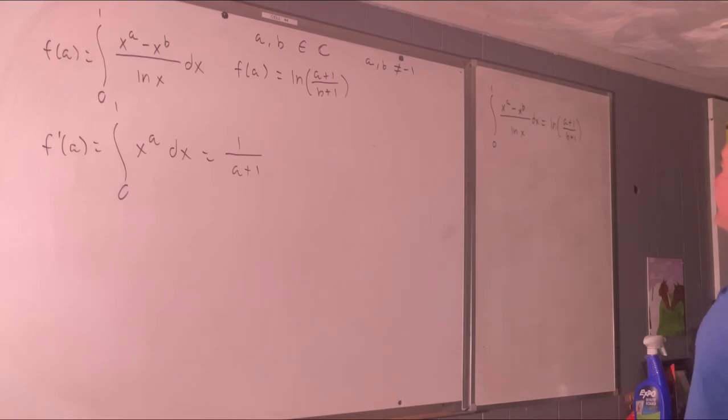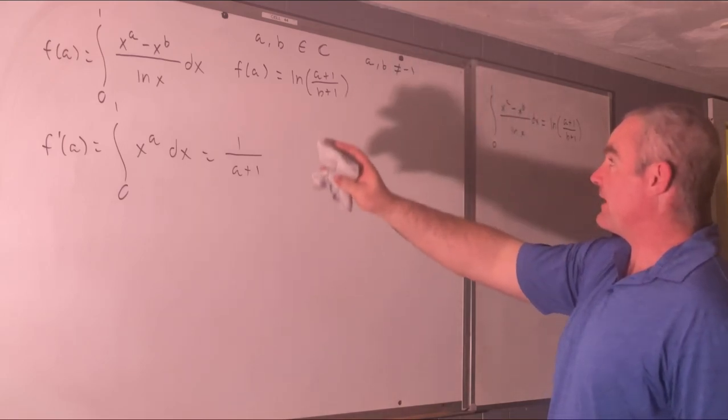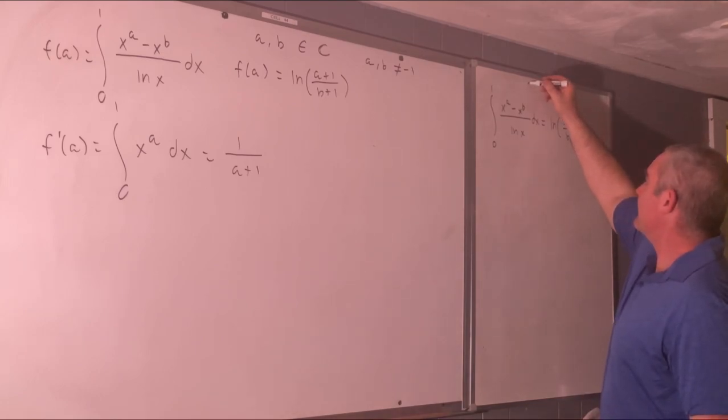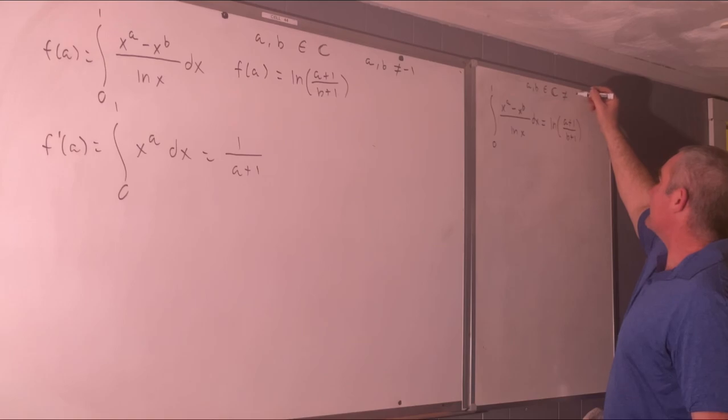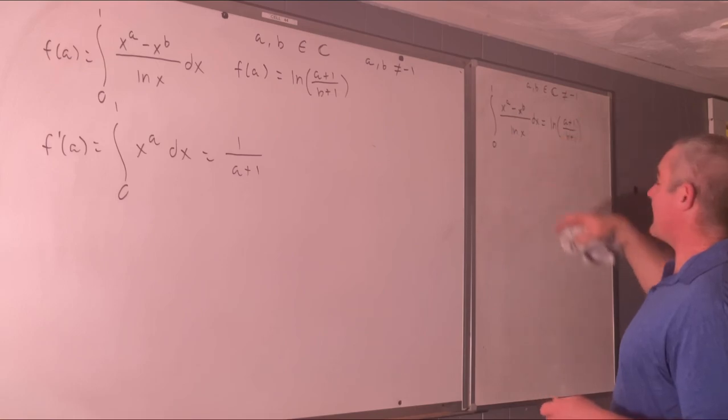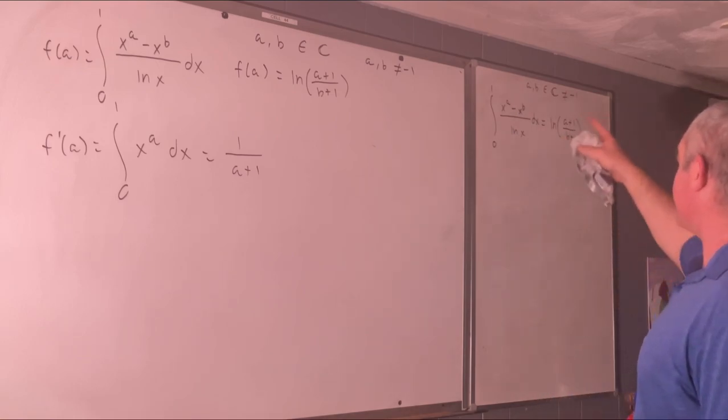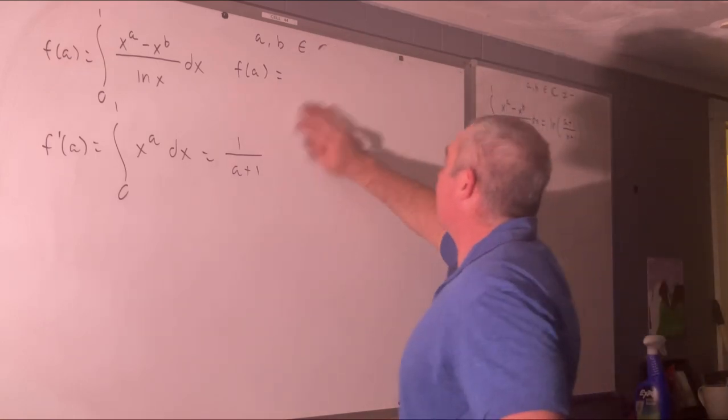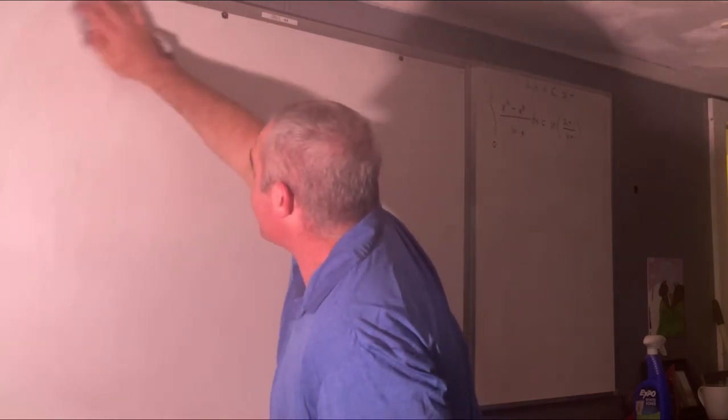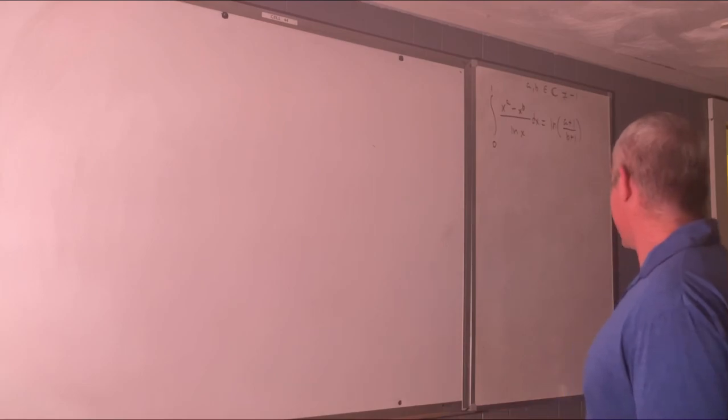Alright, and now I'm going to erase everything else. I'll put right here: a and b exist in the complex numbers not equal to negative 1. Yeah. So that should do it. That should be true. Correct me in the comments if I'm wrong or if there's something I forgot, but I'm pretty sure that's correct.